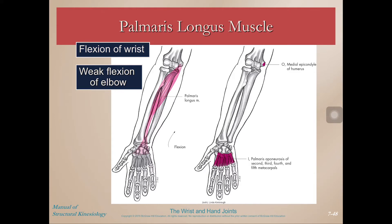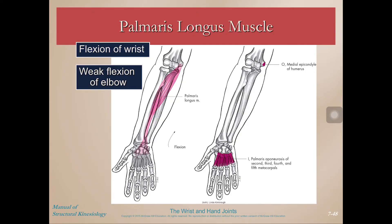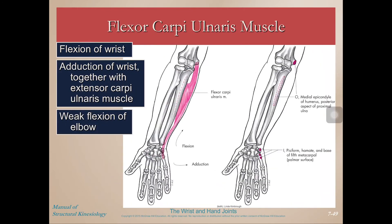Palmaris longus — if you put your thumb into opposition and touch your pinky, then flex your wrist, you're going to see that palmaris longus tendon pop up. It does wrist flexion as well as weak flexion of the elbow, because it's crossing that elbow. So a lot of these wrist flexors will also contribute to elbow flexion.